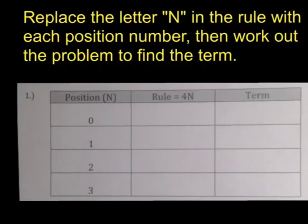In question one what we need to do is we are going to look at the rule which is in the center of your table. On this one it says the rule is 4n. 4n, that means I'm going to take every one of these position numbers and I'm going to multiply them by 4.